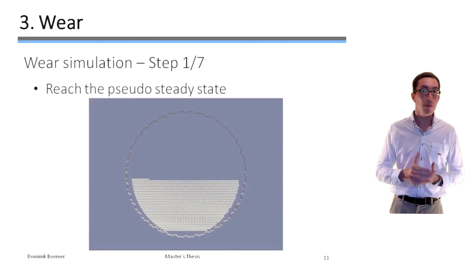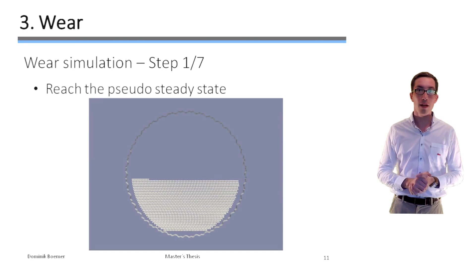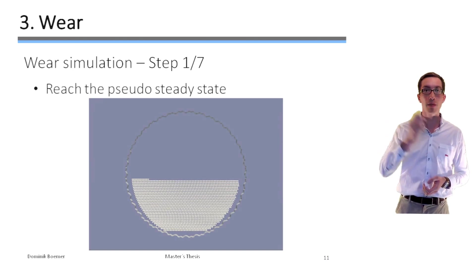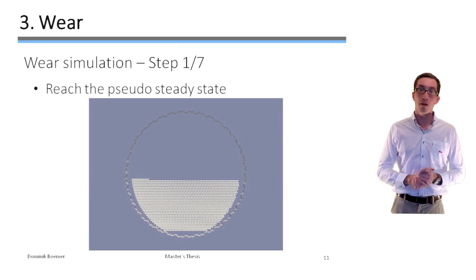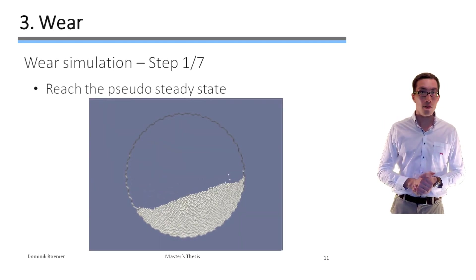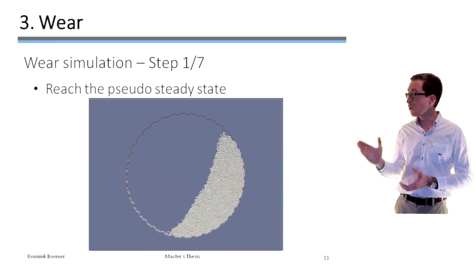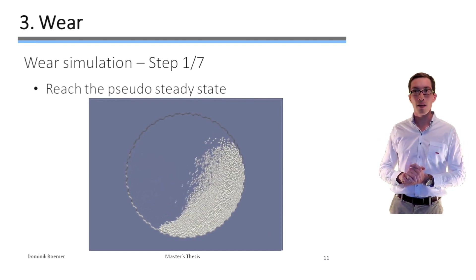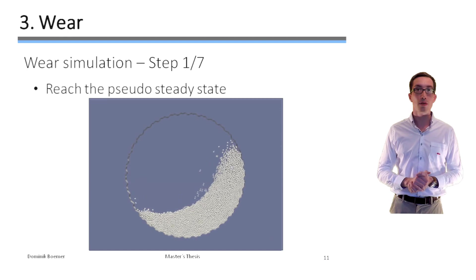First, we have to reach the pseudo steady state to accumulate the wear data since real ball mills rotate at a constant angular speed during several 10,000 hours. So initially the charge is lifted up and it falls down and finally we are in the pseudo steady state.